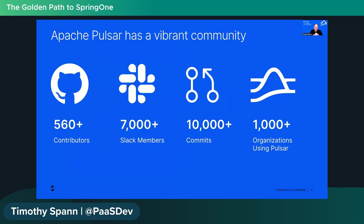Apache Pulsar is pretty amazing and growing really fast. The community is large and vibrant, with over 500 contributors and committers to the project. There are over 7,000 people active on the Slack — definitely join up to see what's going on. It is a very busy project. The number of commits is massive, tons of people using it, tons of organizations. We passed 1,000 different organizations using Pulsar, so definitely something worth checking out.